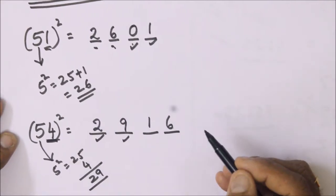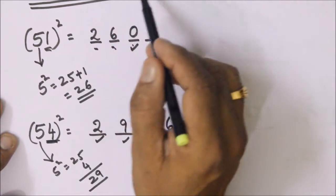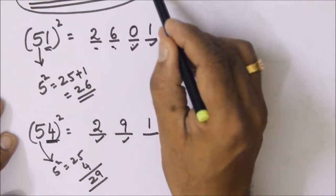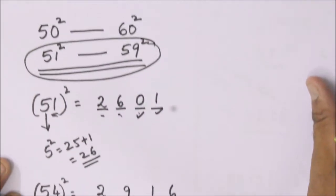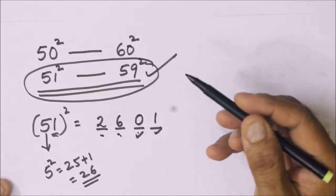So this way we can find the squares of the numbers from 51 to 59 in a simple way.